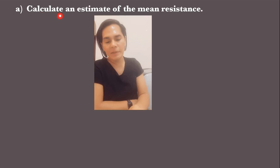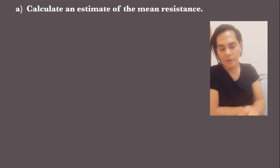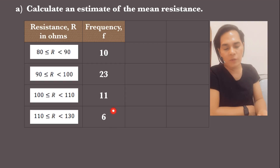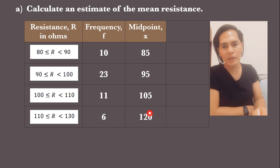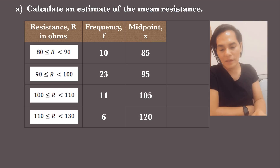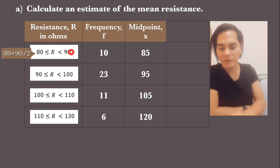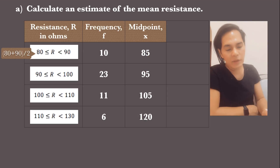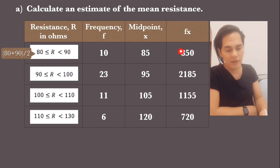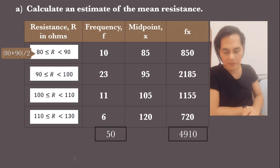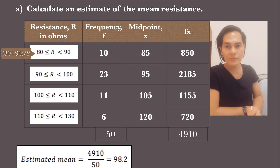Let's start with letter A — calculate an estimate of the mean resistance. Copy the table with resistance in ohms and frequency. This time we also need a midpoint column, because these are grouped data. The midpoint is found by adding the lower and upper limits and dividing by 2: for the first class, (80+90)/2 = 85, and so on. Then compute Fx by multiplying the midpoint by the frequency — for the first class, 85×10 = 850. Get the totals of F and Fx, divide them, and the estimated mean is 98.2.